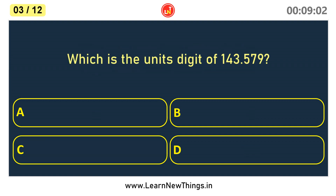Which is the unit's digit of 143.579? The answer is 3.